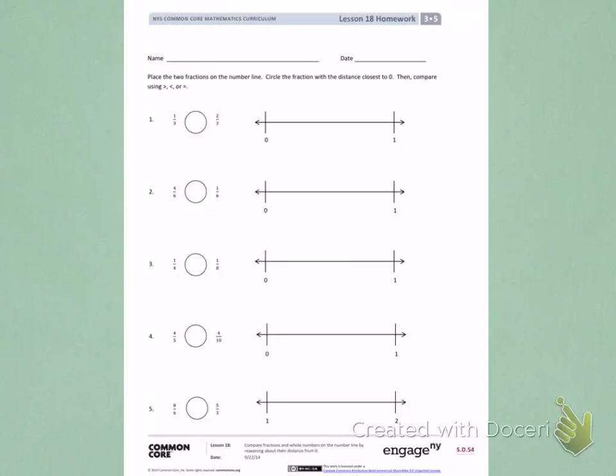This is Module 5, Lesson 18 Homework, Side 1. Today's objective was to compare fractions and whole numbers on the number line by reasoning about their distance from zero.